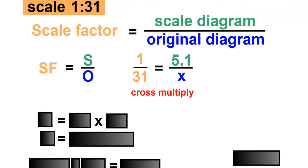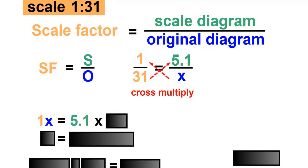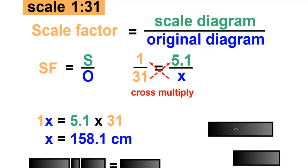We'll use X for the unknown. Next, we can cross multiply to solve. 1 times X equals 5.1 times 31. 1x can be written as just X, and 5.1 times 31 is 158.1 centimeters.